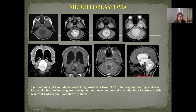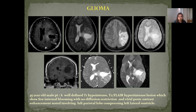Case 2 — Medulloblastoma: 7-year-old male patient with a well-demarcated T1-hypointense, T2 and FLAIR heterogeneously hyperintense lesion showing heterogeneous peripheral enhancement involving the fourth ventricle with resultant hydrocephalus. Case 3 — Glioma: 45-year-old male patient with a well-defined T1-hypointense, T2 and FLAIR hyperintense lesion with few internal blooming, no diffusion restriction, and vivid post-contrast enhancement involving the left parietal lobe compressing the left lateral ventricle.